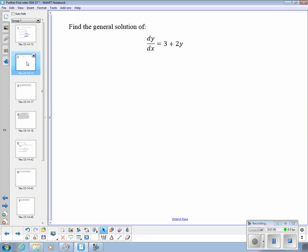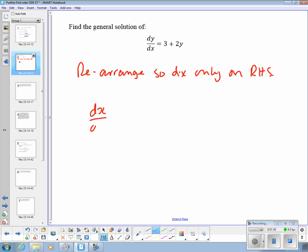So the first task is to rearrange to get dx only on the right hand side. So we can immediately start that rearrangement by taking the reciprocal of both sides: dx over dy is equal to